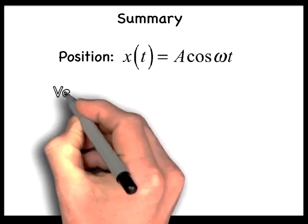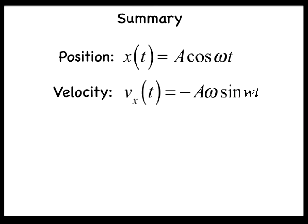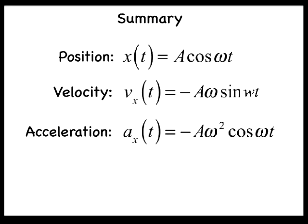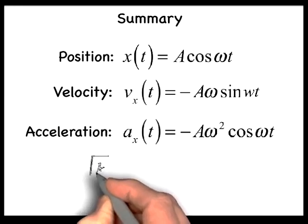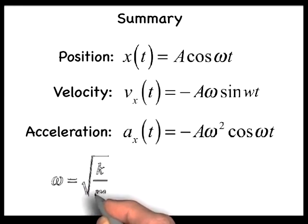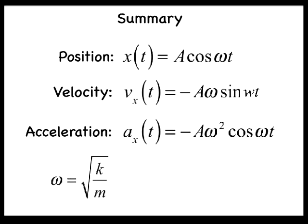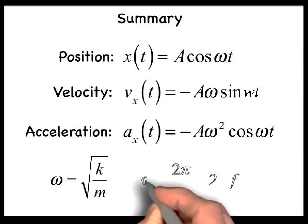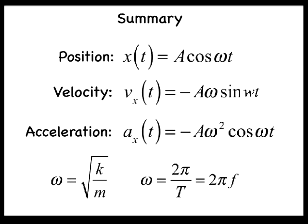In summary, we have used the reference circle to derive expressions for the position, velocity, and acceleration of the simple harmonic oscillator as a function of time. In the case of a mass oscillating at the end of a horizontal spring, the angular frequency is given by omega equals the square root of k divided by m, where k is the spring constant. The relationship between the angular frequency, period, and frequency is given by omega equals 2 pi divided by T, which equals 2 pi times f.